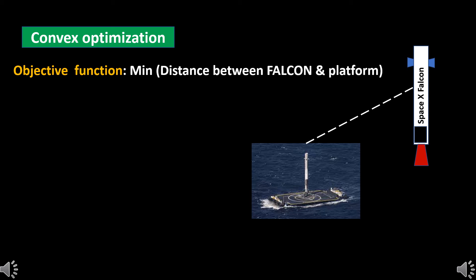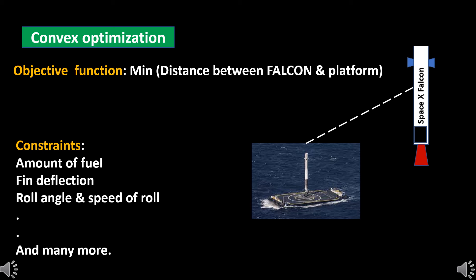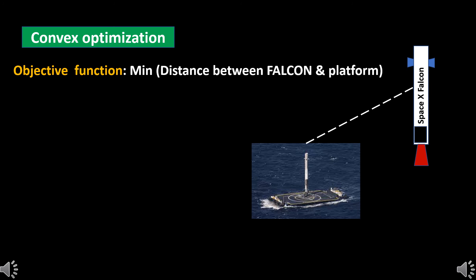All optimization problems will have a set of constraints within which we have to solve the objective. Some of the constraints in Falcon are amount of fuel which is restricted due to weight, maximum roll angle limitation, velocity of descent to avoid crash, maximum fin deflection and so on. So the minima of the objective function should be solved subjected to these constraints. The objective function will be made up of the x, y and z position variables with respect to time, so we actually get the optimal path at different times during the optimization.